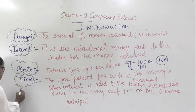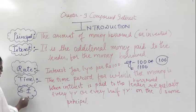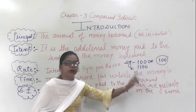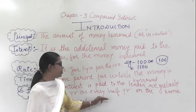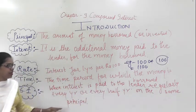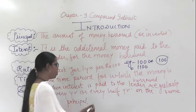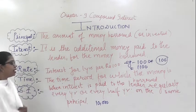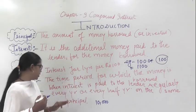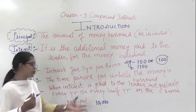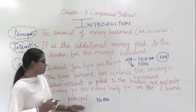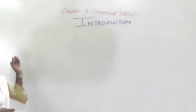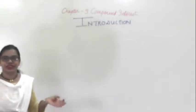The last basic term is Simple Interest. Simple Interest is when interest is paid to the lender regularly every year or every half year on the same principal amount. So we have studied what is Principal, Rate, Simple Interest, and Time Period.